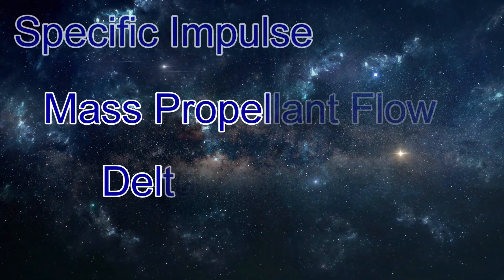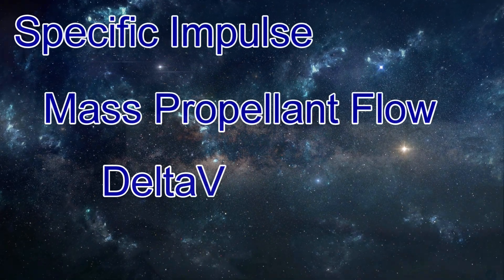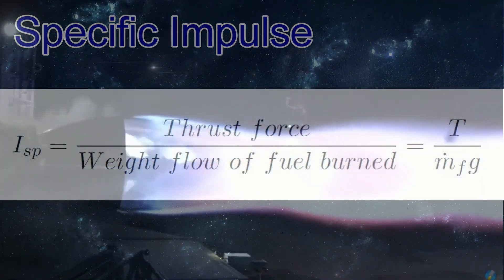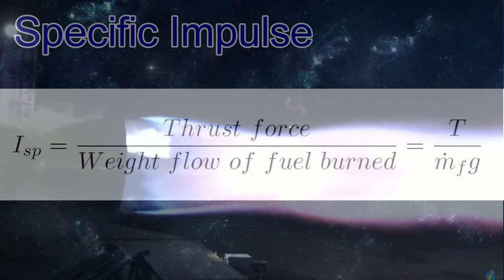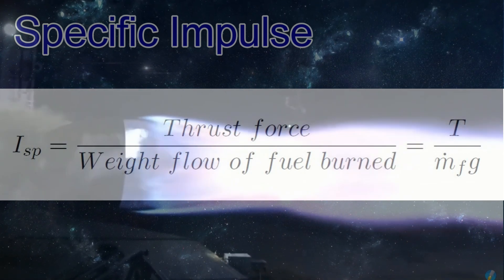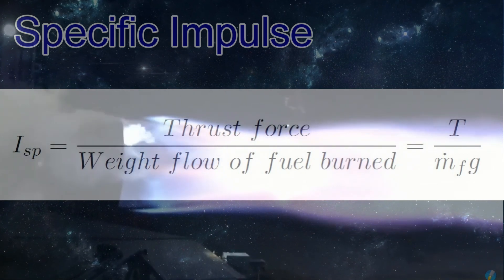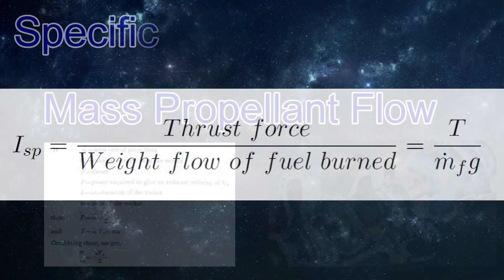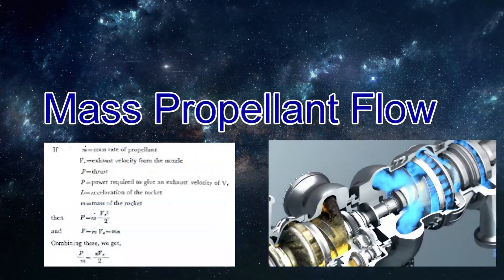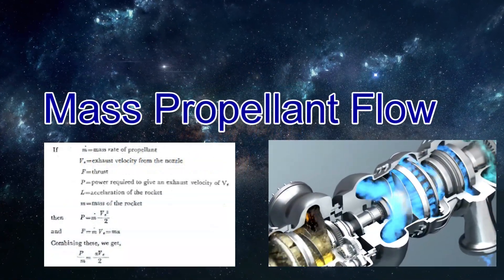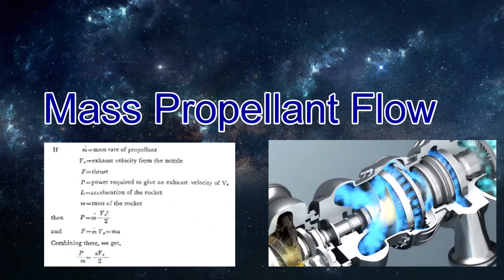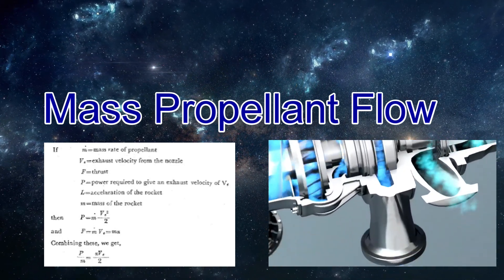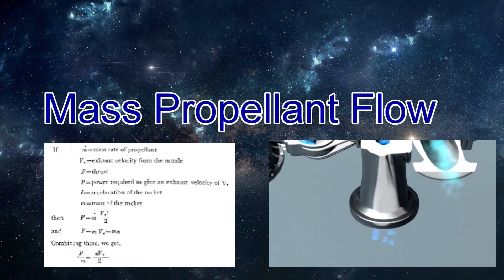The first two concepts are pretty easy to grasp. Specific impulse is a way to measure the efficiency of a rocket engine. You can start with metric or imperial, and you will get the same value in the end. Mass propellant flow may not be a familiar term, but we can intuitively understand that it's talking about the mass of propellant flowing through our rocket engine into the combustion chamber per second.